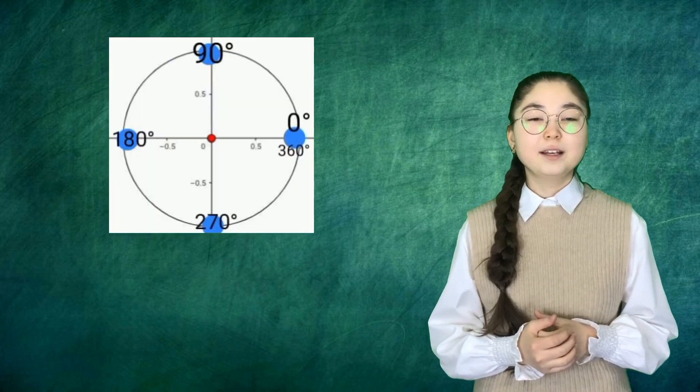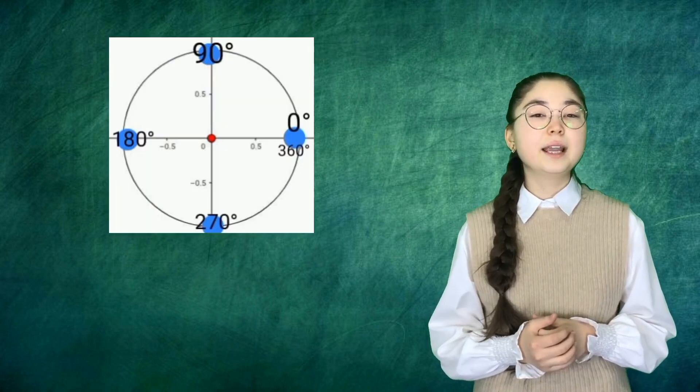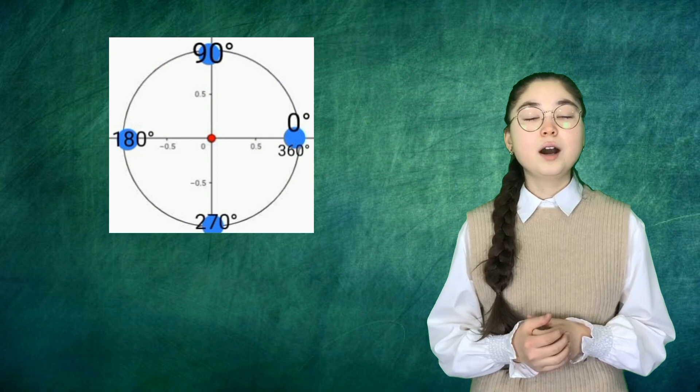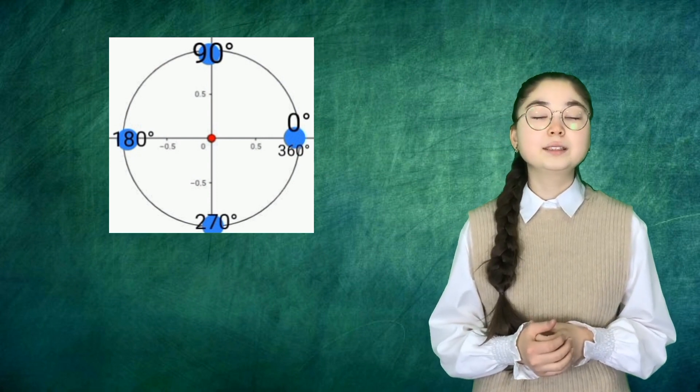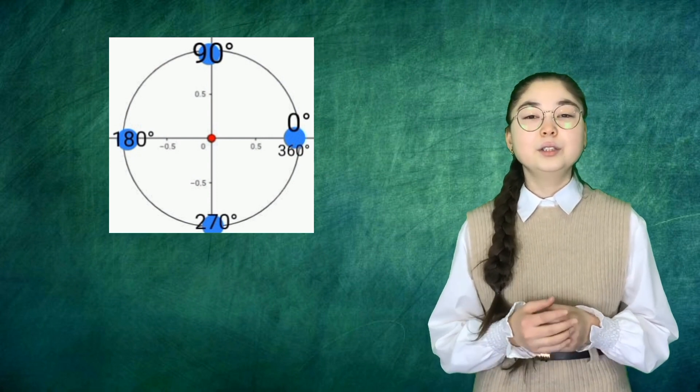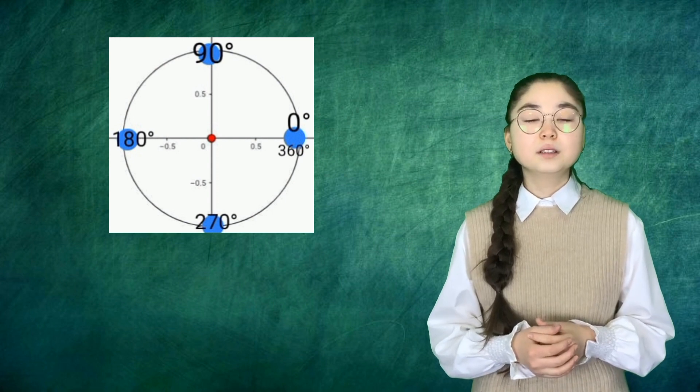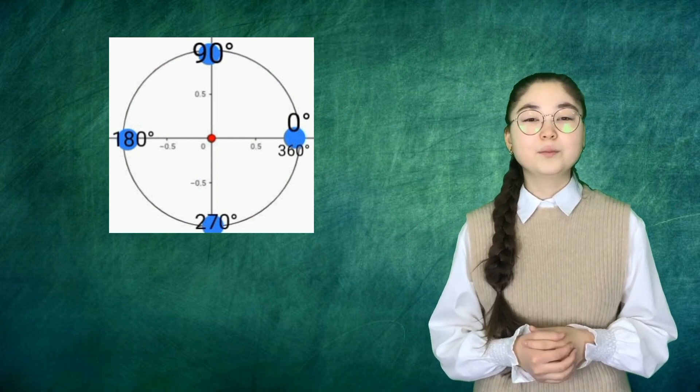In the unit circle, there are five main points: 0 degrees, 90 degrees, 180 degrees, 270 degrees, and 360 degrees. And using the formula, we can convert to radians.